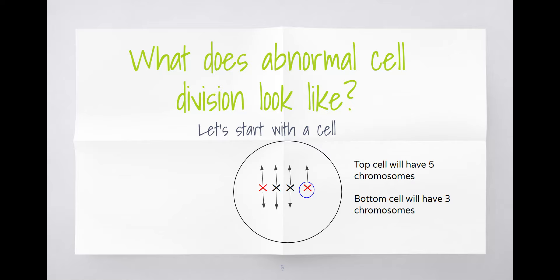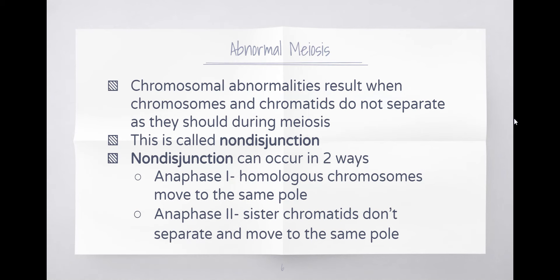Abnormal meiosis involves chromosomal abnormalities that result when chromosomes and chromatids don't separate. When this happens, we call it non-disjunction. Non-disjunction is when chromosomes don't separate properly. Non-disjunction happens in two ways: it happens in either Anaphase 1, where homologous chromosomes don't move to opposite poles, or in Anaphase 2, where sister chromatids don't separate. I'm going to show you both of these shortly.